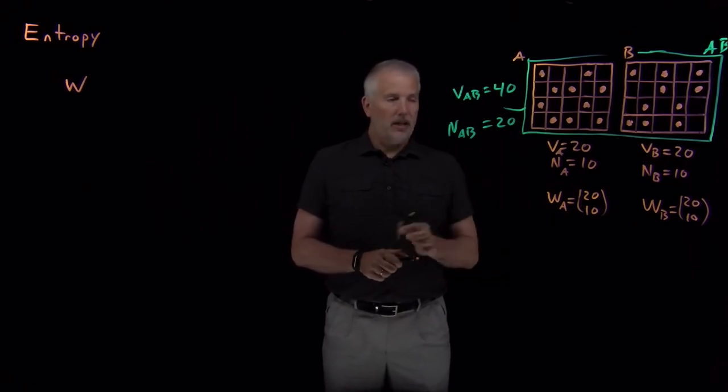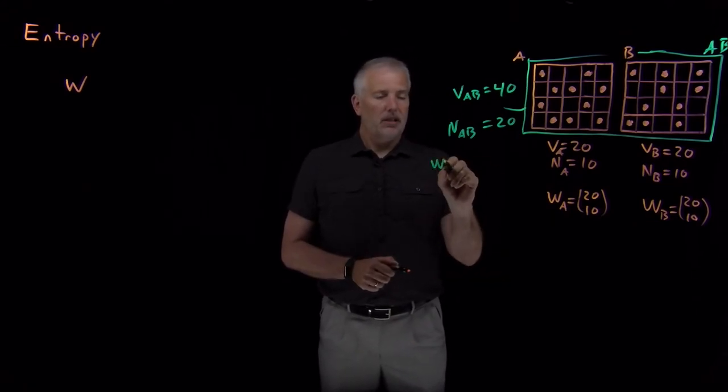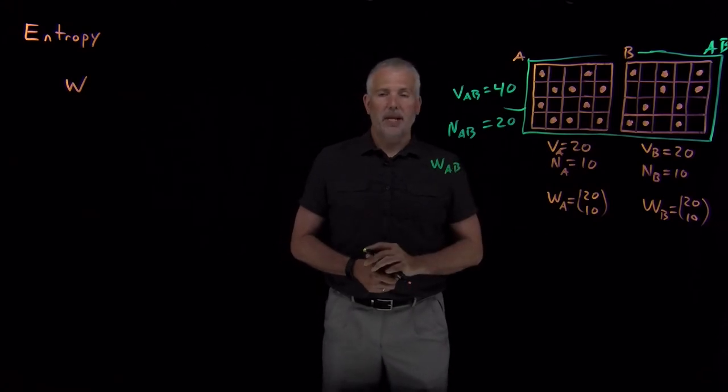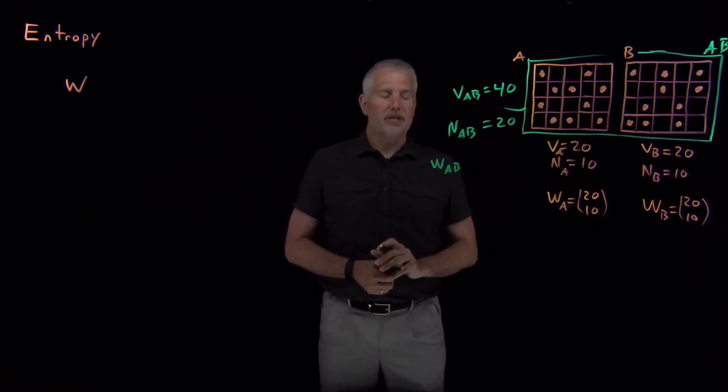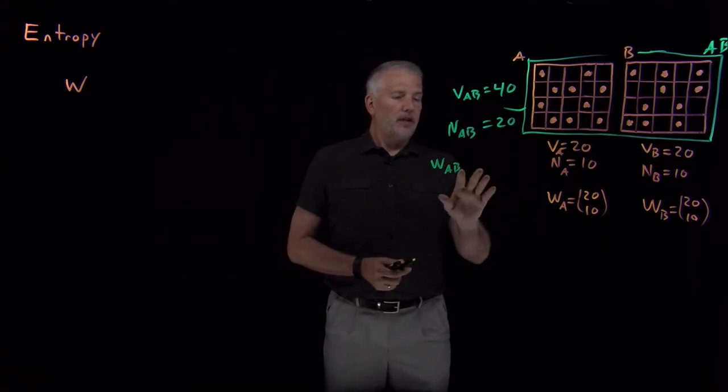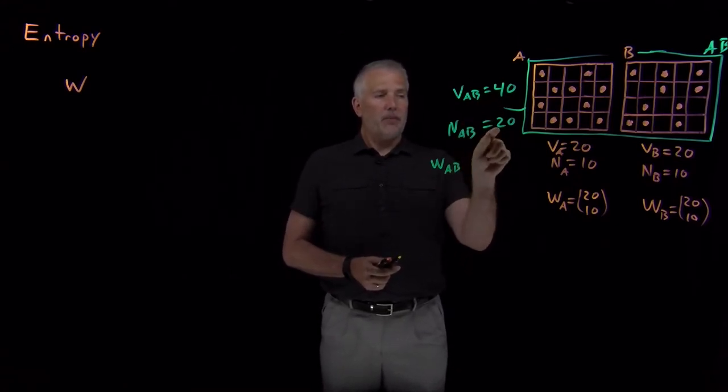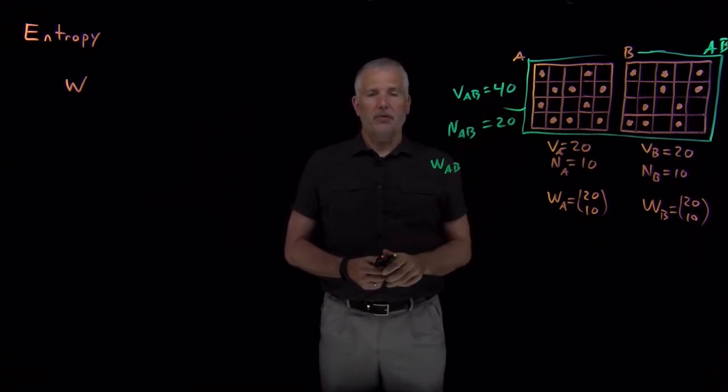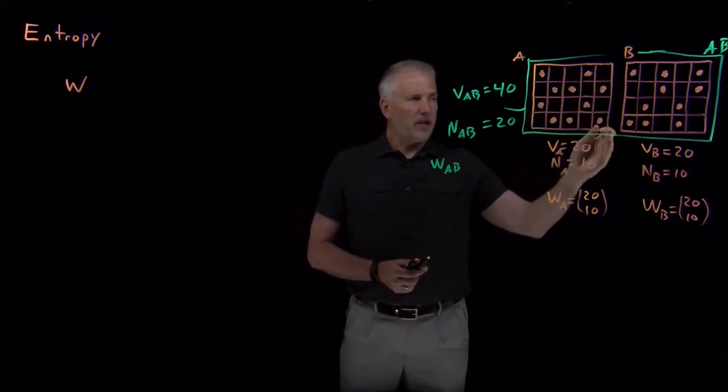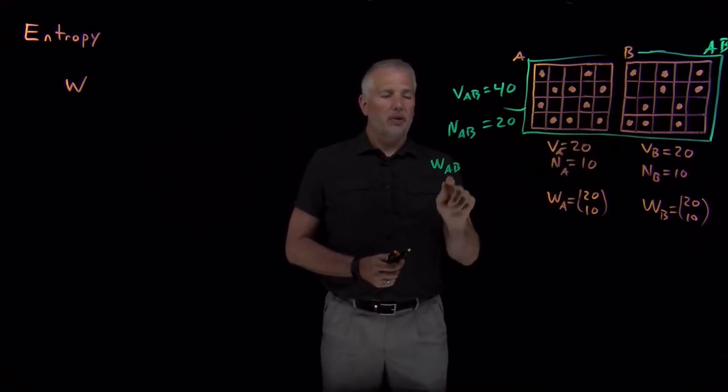What about the multiplicity for the combined system AB? There's two ways to think about that. We could think of it as number of ways of putting 20 molecules in 40 boxes, but that's not quite because I haven't taken away the barrier between these two.